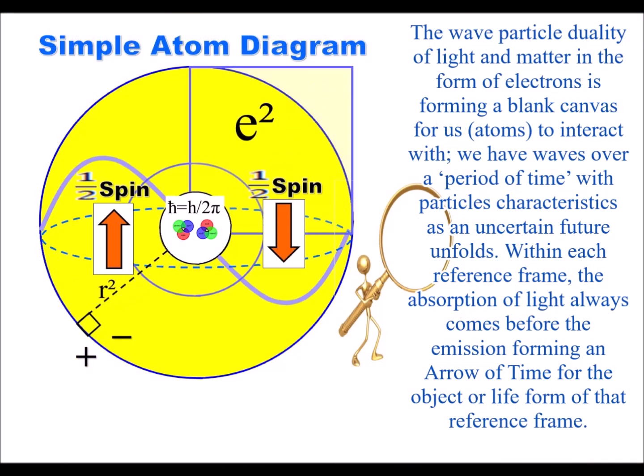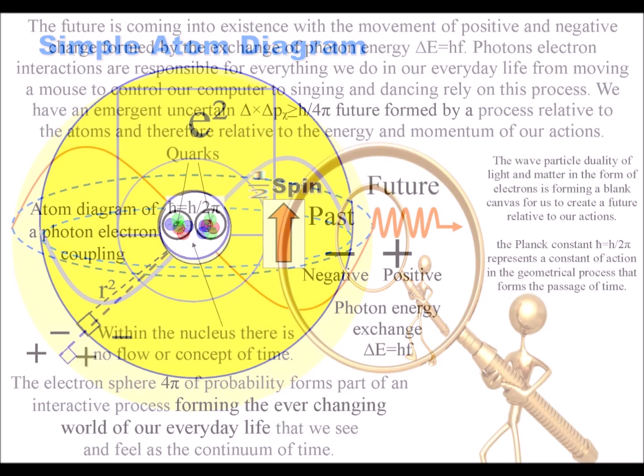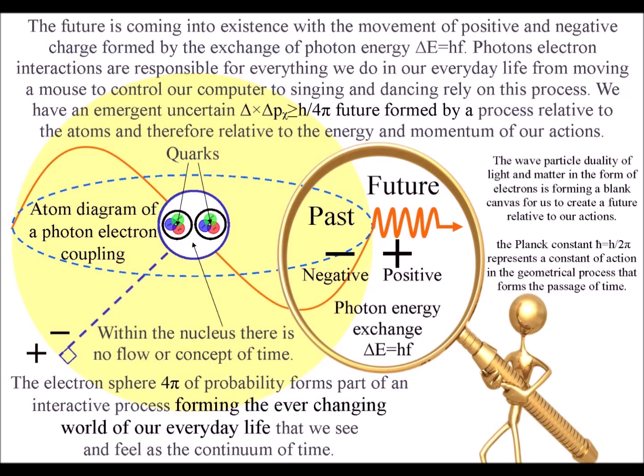With the spherical surface forming an extra dimension that we comprehend and measure as time. The two-dimensional surface of the sphere also forms a boundary condition, or manifold, for positive and negative charge.